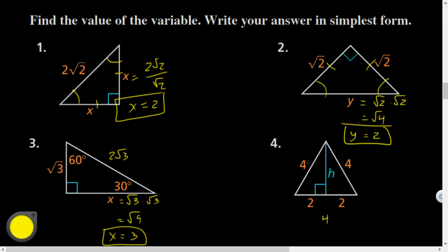Problem 4: The total length is 4, so this is equilateral/equiangular — all angles are 60 degrees. If one angle is 90, the remaining angle is 30. Within this shape there's a 30-60-90 triangle, and 2 is the short leg. Multiply by √3: h = 2√3.